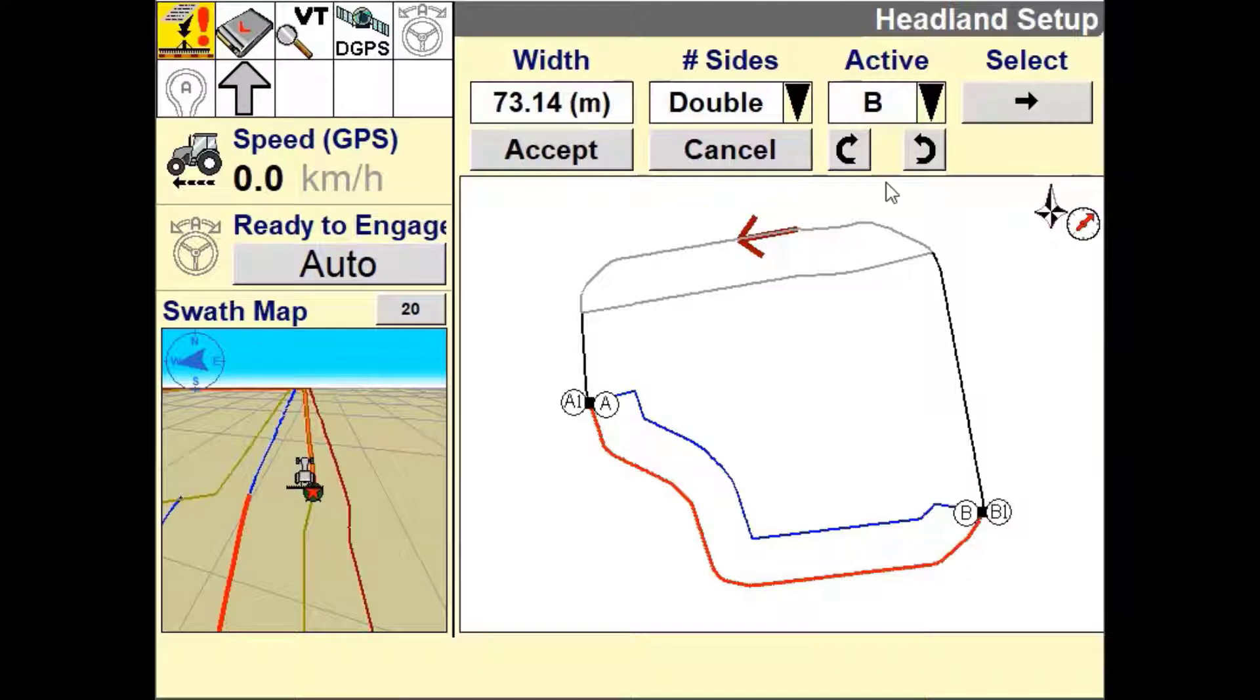Moving either of these points will alter the design of the headland boundary. There are two ways to move these points. First select the active point you wish to move then press the map screen where you wish to move this point to.